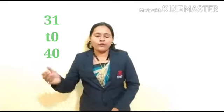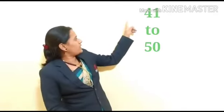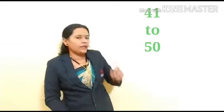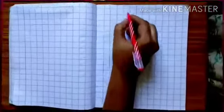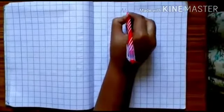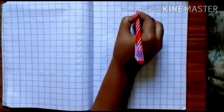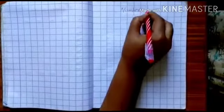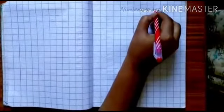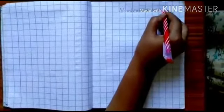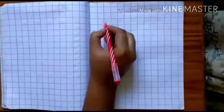Now, in today's session, we are going to write numbers 41 to 50 on our box notebook. Are you ready? So, let's start our today's session. Numbers 41 to 50.